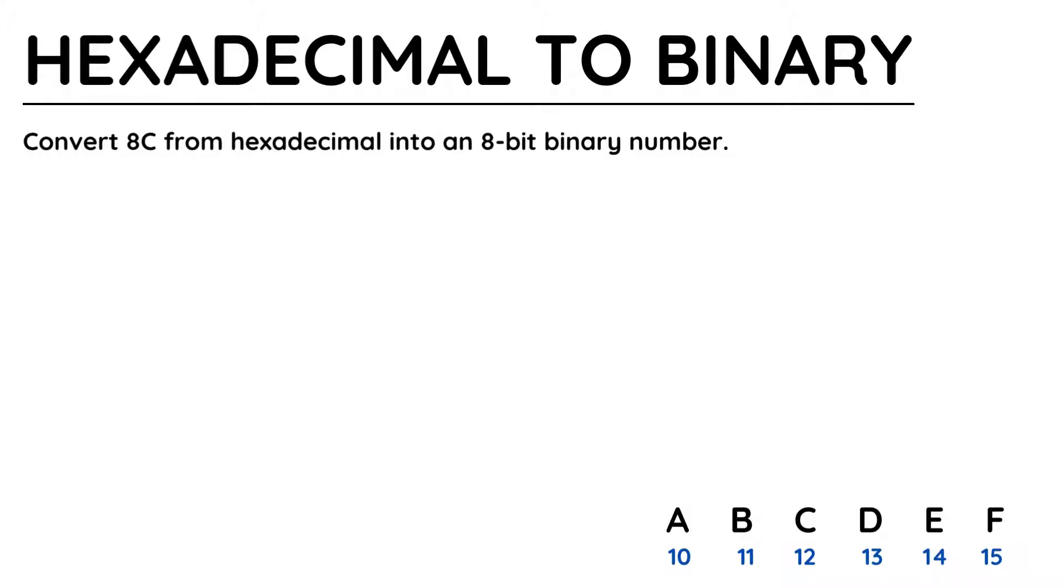Each character in hexadecimal is represented in 4 bits, so 8 will require 4 bits and C will require another 4 bits.